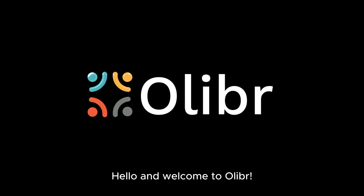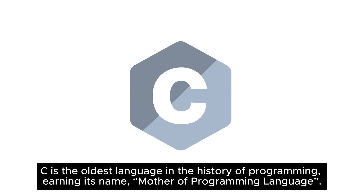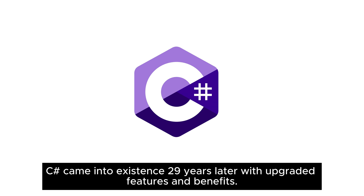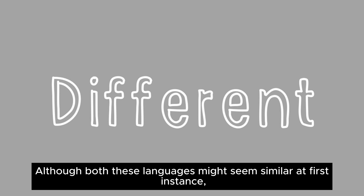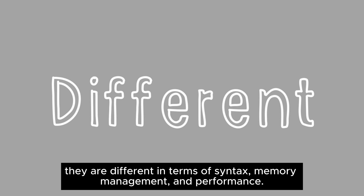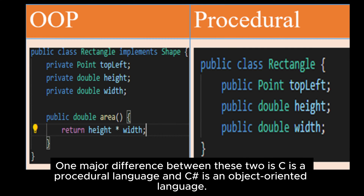Welcome. C is the oldest language in the history of programming, earning its name 'mother of programming languages.' C# came into existence 29 years later with upgraded features and benefits. Although both these languages might seem similar at first, they are different in terms of syntax, memory management, and performance. One major difference is that C is a procedural language and C# is an object-oriented language.